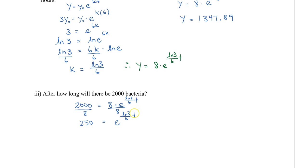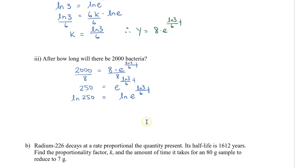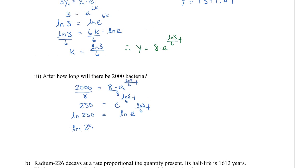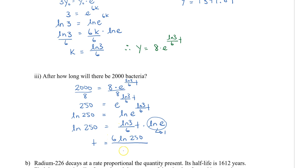So I get 250 equals e to the power of ln 3 over 6 times t. Again, we want to find t, which is an exponent, so we take the natural logarithm of both sides. We bring the exponent down to the front times the natural log of e, and that part equals 1. So t equals ln 250 multiplied by 6, then divided by ln 3 — I multiplied by 6 over ln 3 to cancel that off. Plugging this into the calculator, my time is 30.155 hours.